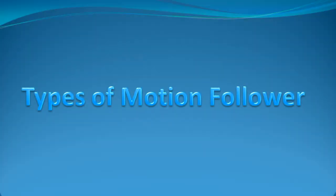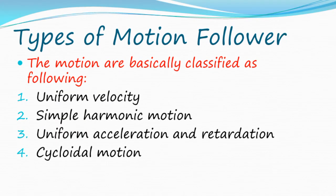In this video we learn about the types of motion. Types of motion follower: The motions are basically classified as following: Uniform velocity, Simple harmonic motion, Uniform acceleration and retardation, and Cycloidal motion.